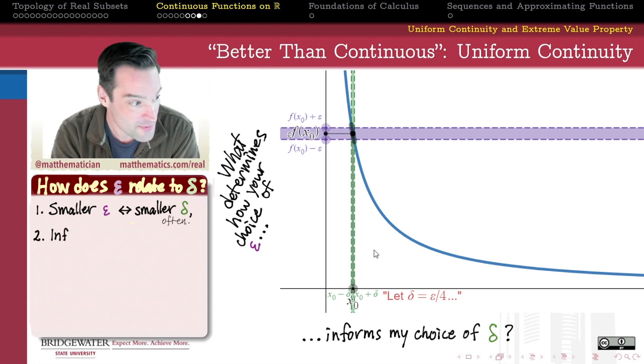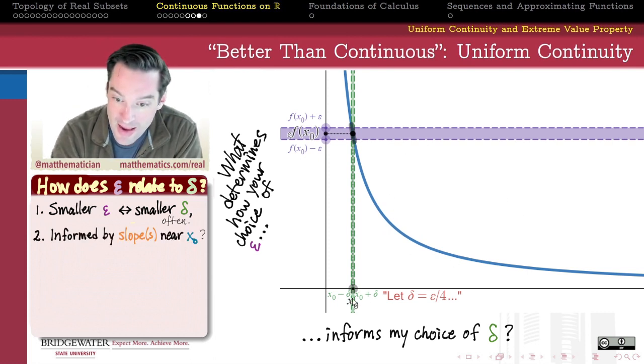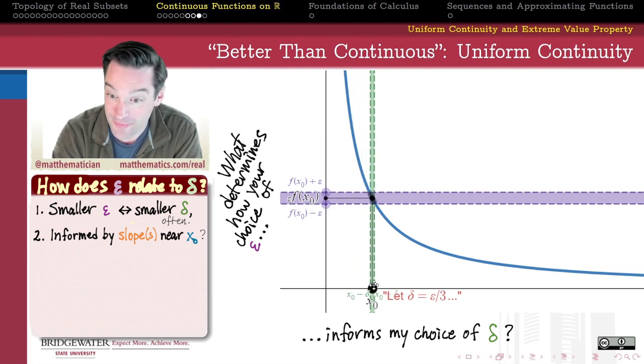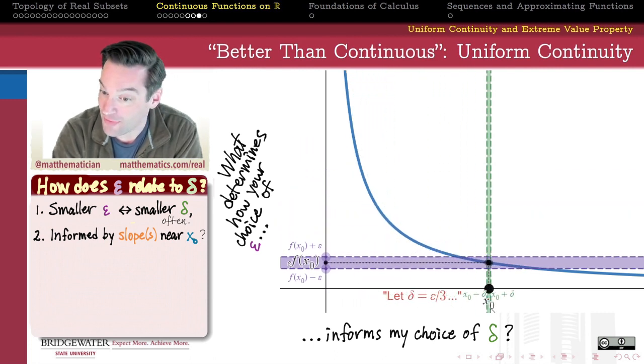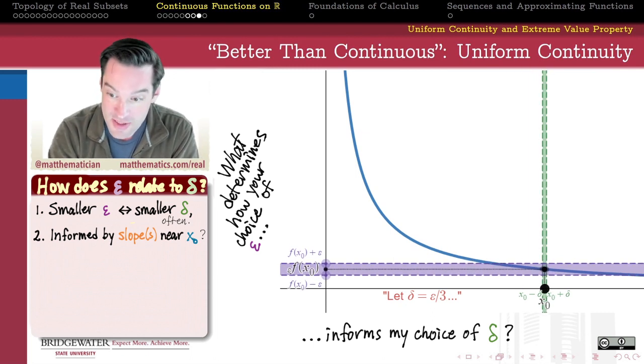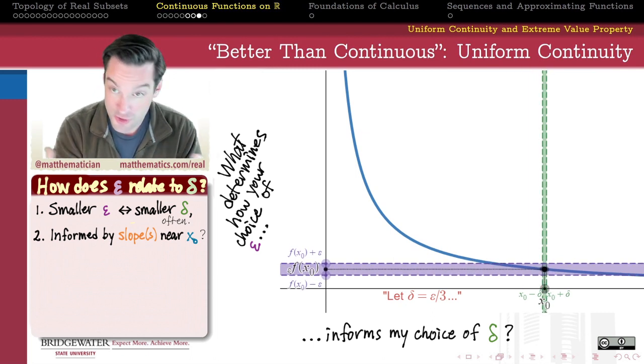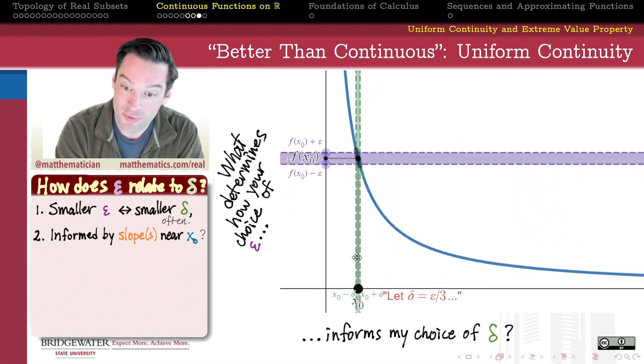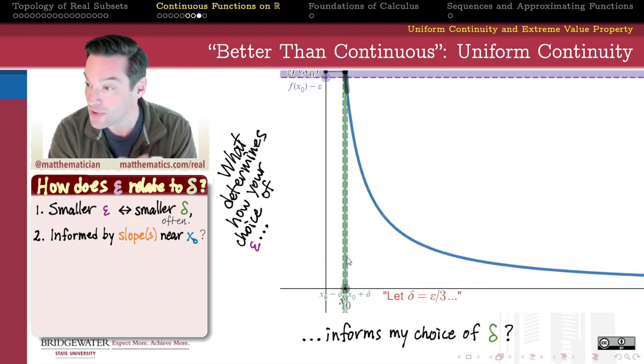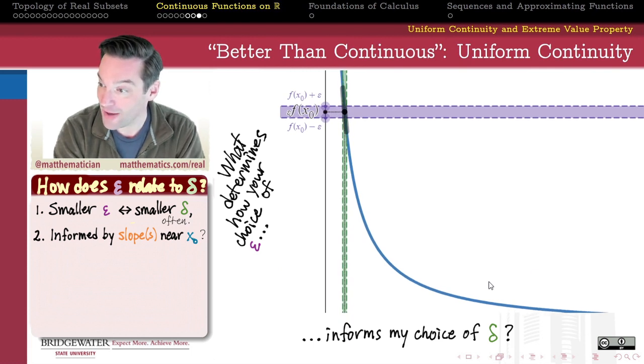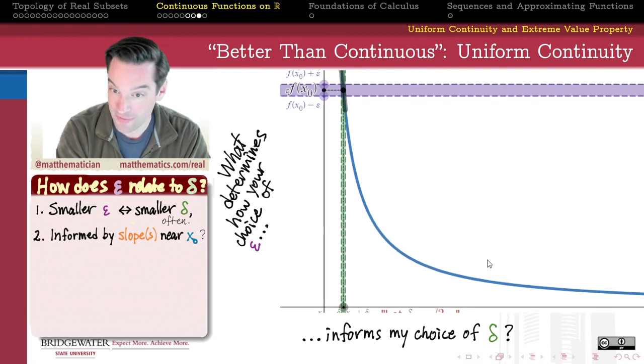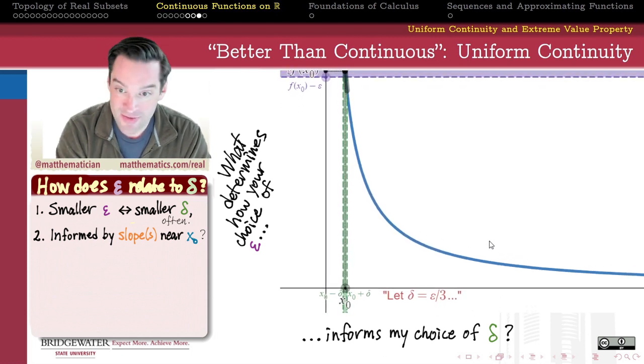So one of the things we notice in this example is that the choice of how epsilon relates to delta can be sort of reflective of the slope of our graph. Where my graph tends to have sort of shallower slopes, we can typically get away with sort of a larger value of delta because the y's aren't changing very much in response to the x's if my slope of my graph is really shallow. Whereas where the slope of my graph gets really steep, that seems to be what's driving some of the failure of my choice of delta to entirely contain the y values within the epsilon strip around f of x0.